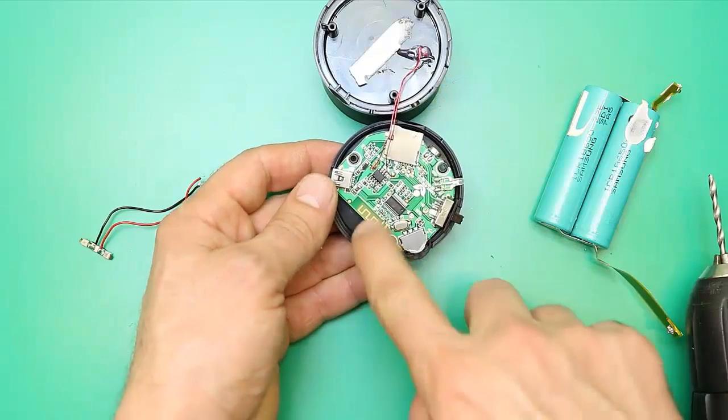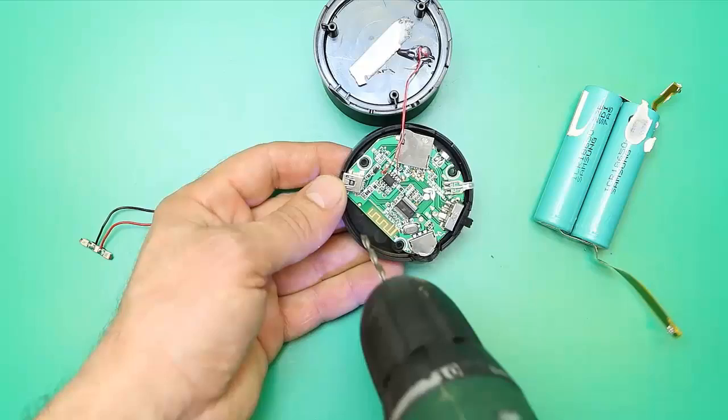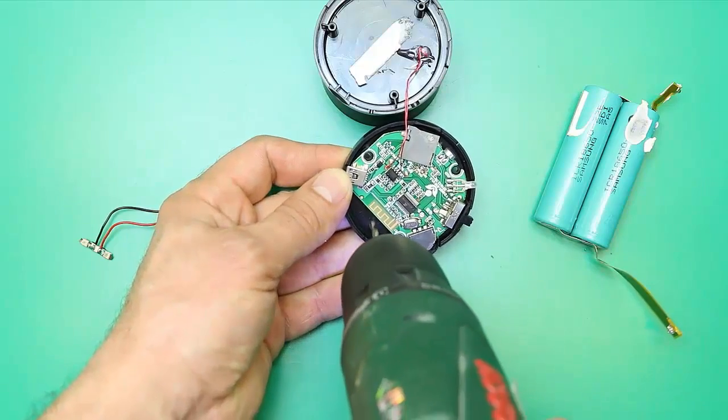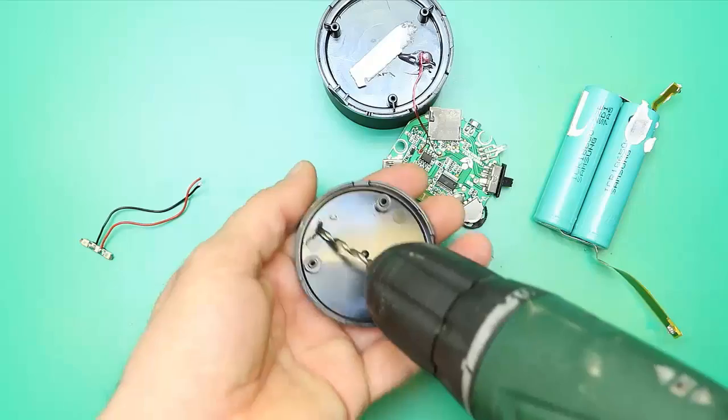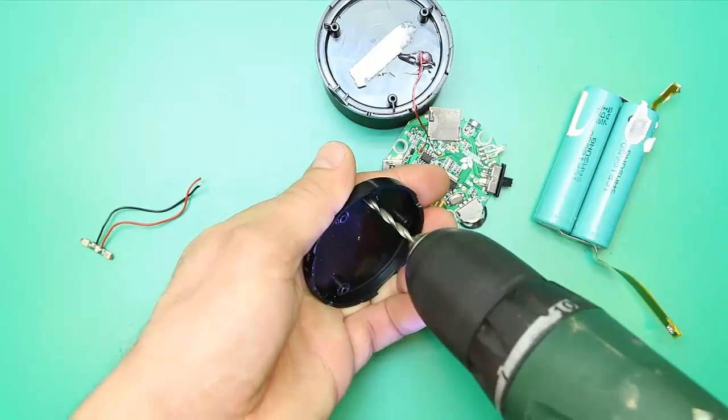Because the new batteries are bigger and will not fit inside, we'll have to put them outside. For this, I make a hole in the lid for the wires.